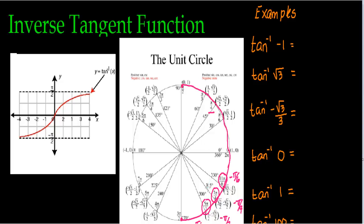So which angle corresponds to a tangent of one? That angle will be negative pi fourths. Negative one comes from dividing sine by cosine, and since they're the same exact values, that gives you one — so this happens at negative pi fourths. Remember, this value is your output and it must be within negative pi halves and pi halves. Negative pi fourths is in between those values, so it is a valid answer.